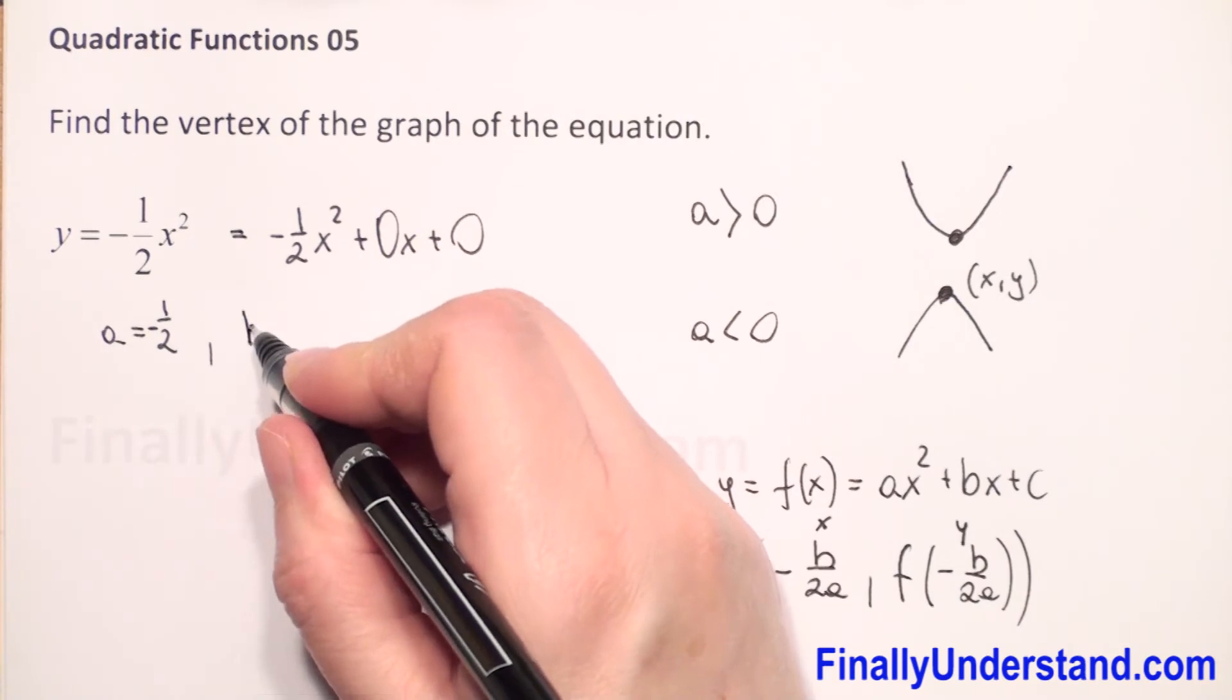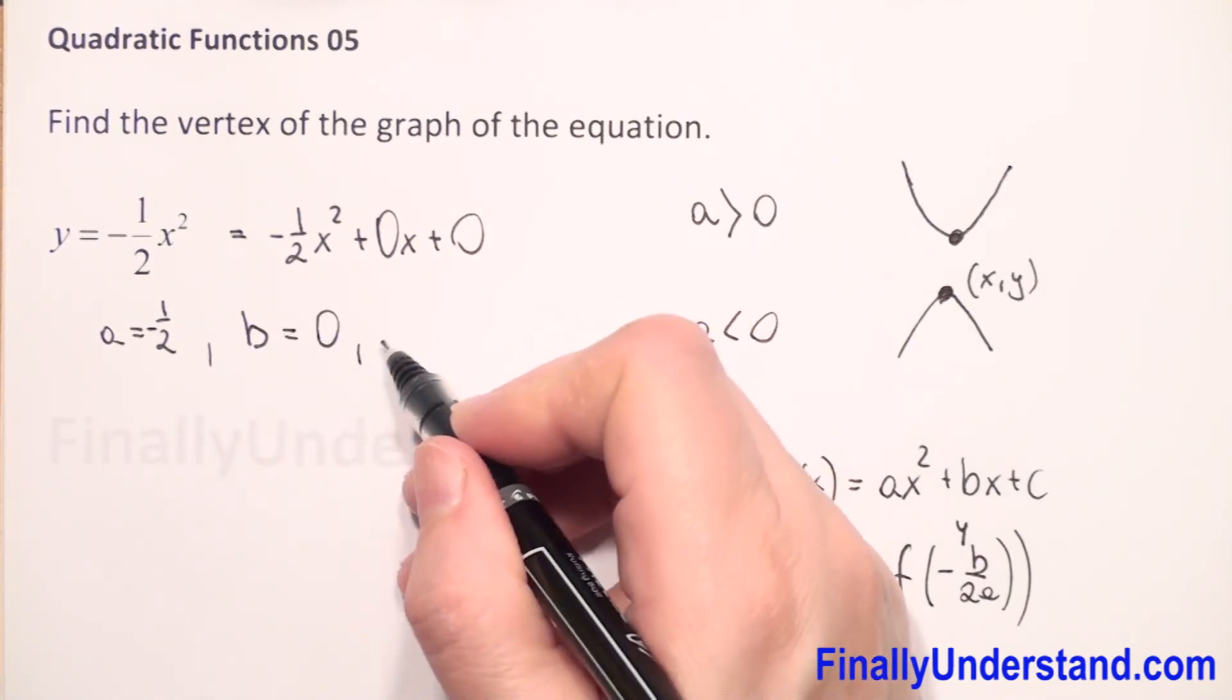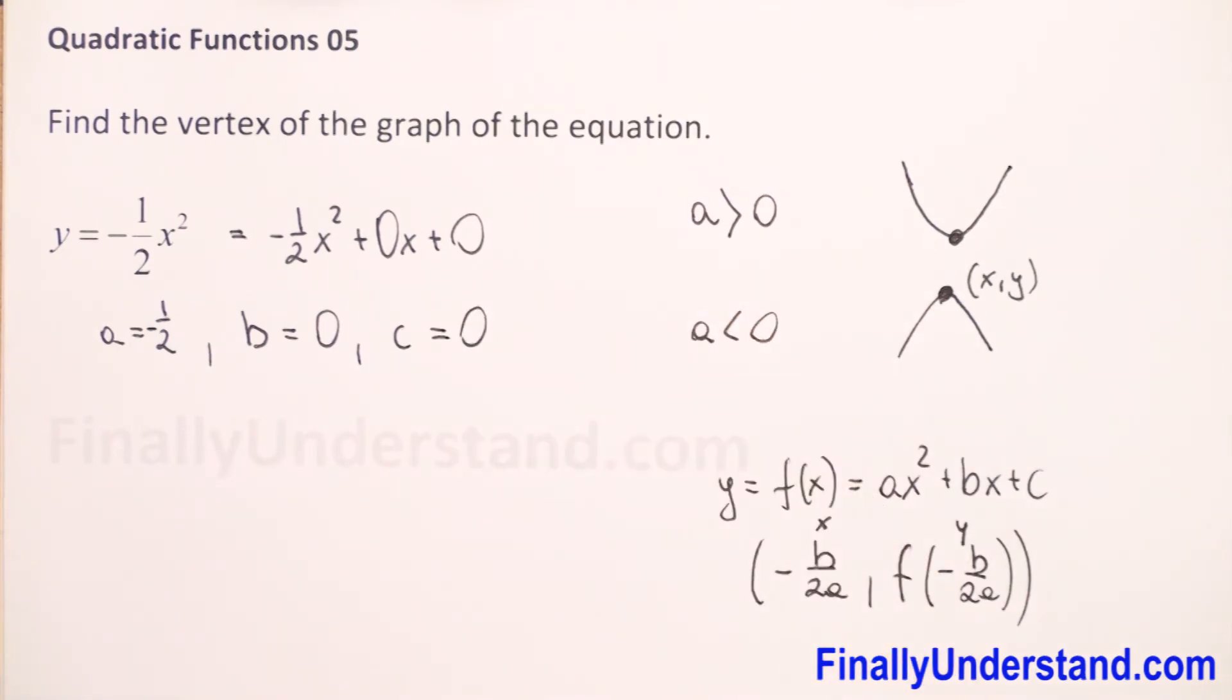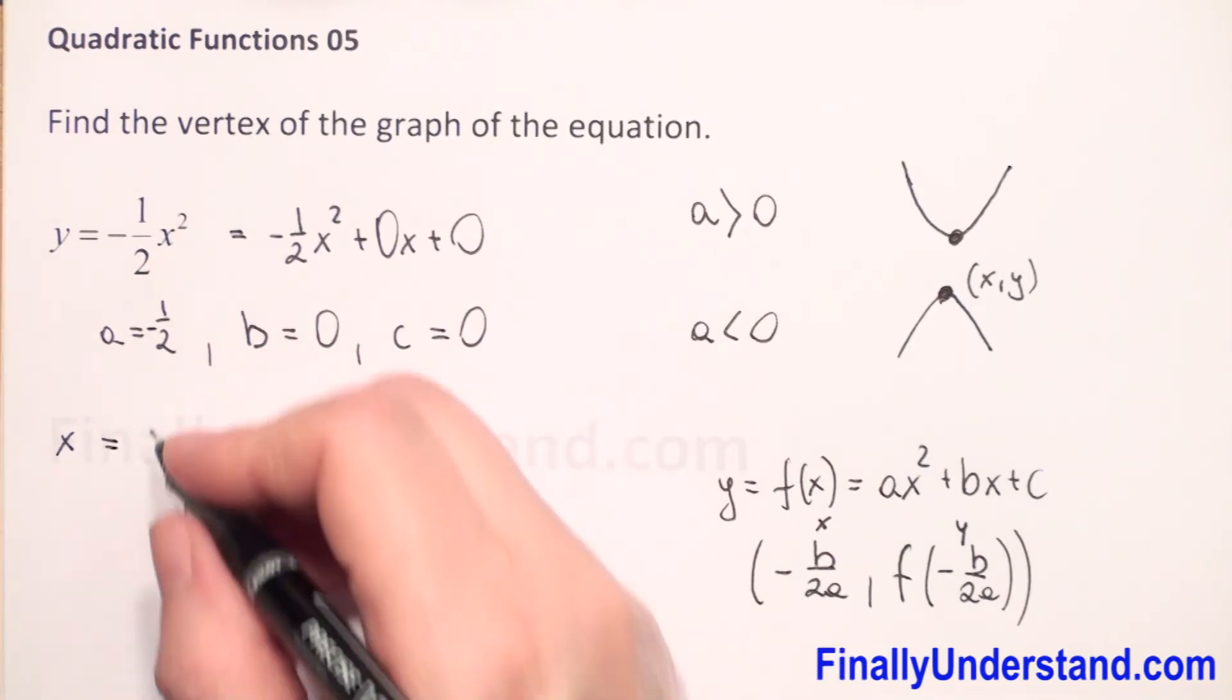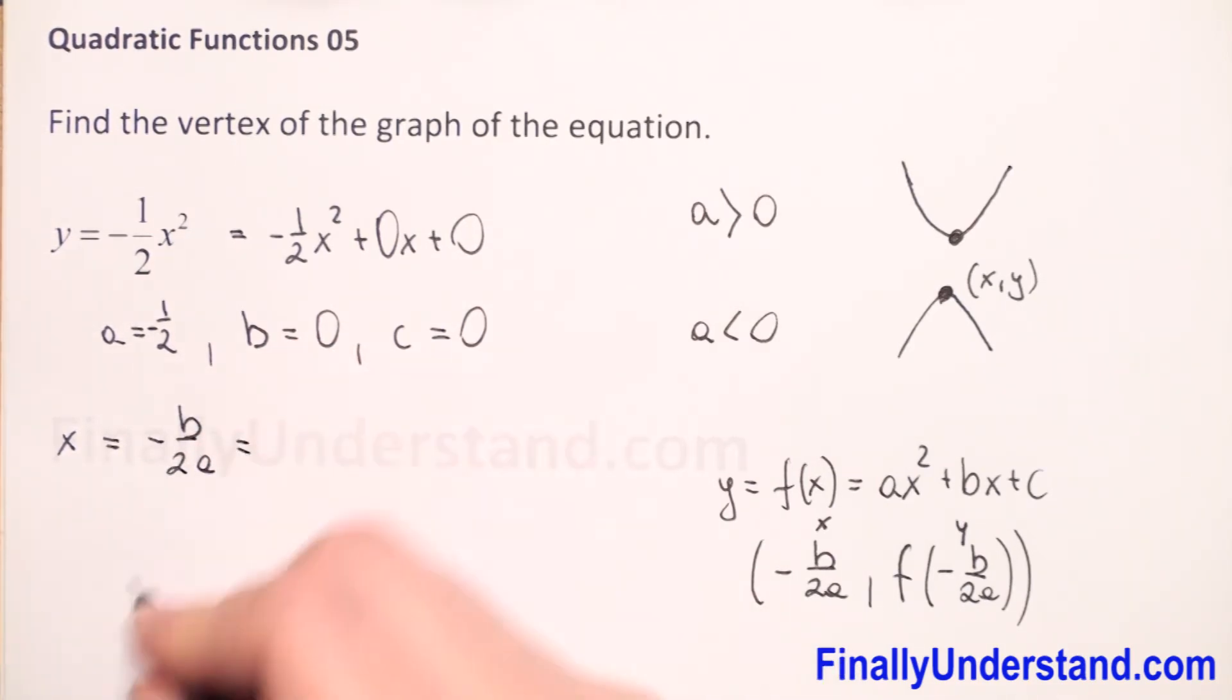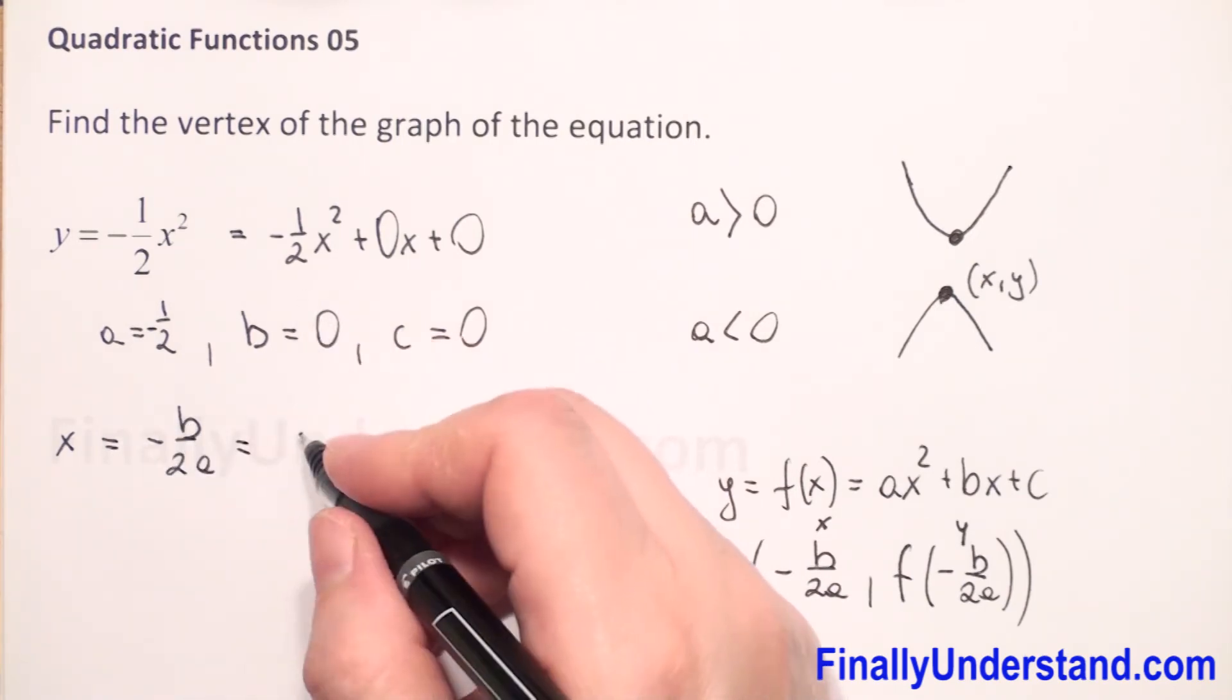Now it's very easy to read how much is b. b is zero and c is equal zero. So we can now find x. The first coordinate is equal negative b over two a, which is equal to, substitute our formula b by zero, negative sign we have to copy.